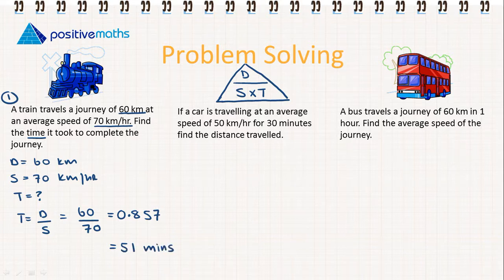The next problem. If a car is travelling at an average speed of 50 kilometres per hour for 30 minutes, find the distance travelled. So again we're going to identify the information we're given. Speed is equal to 50 kilometres per hour. Our time is equal to 30 minutes, which is equal to 0.5 hours.